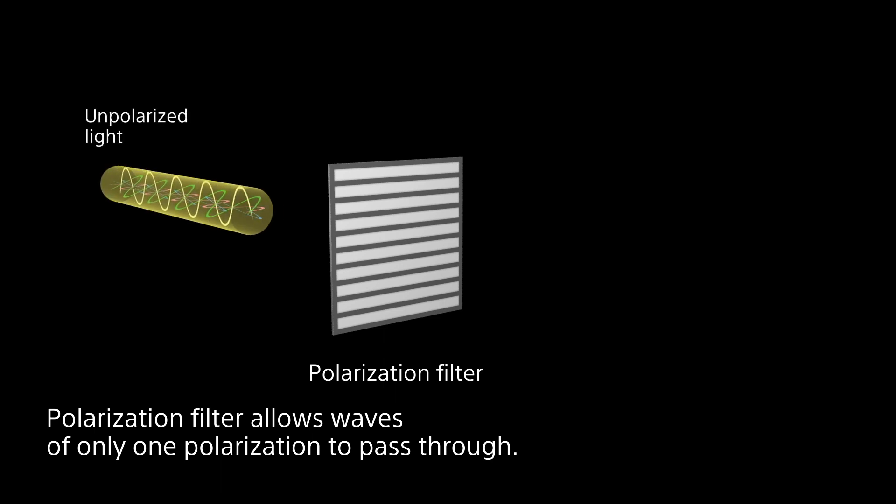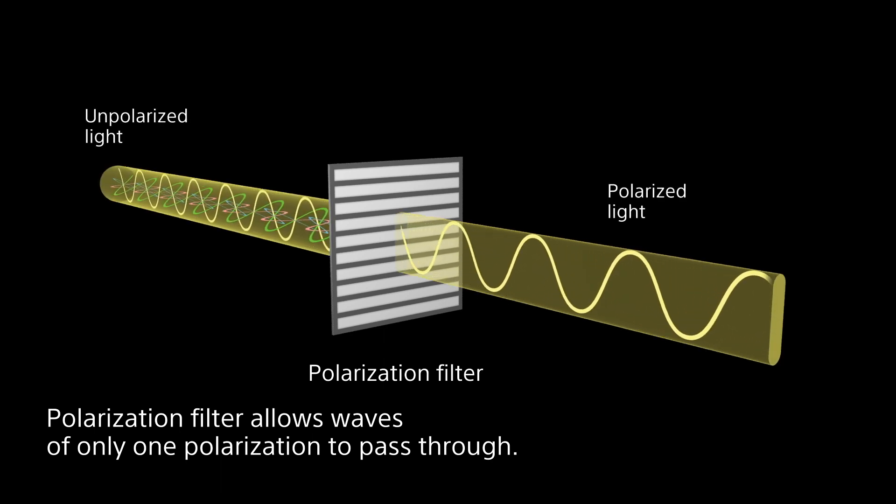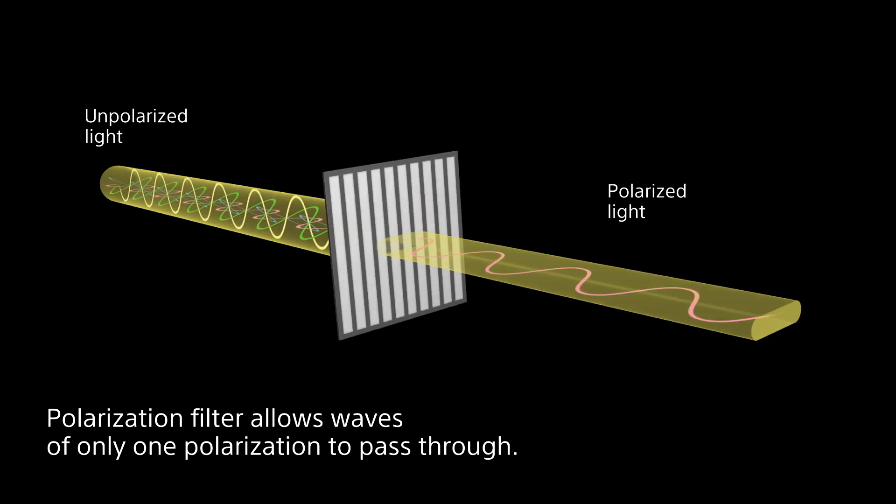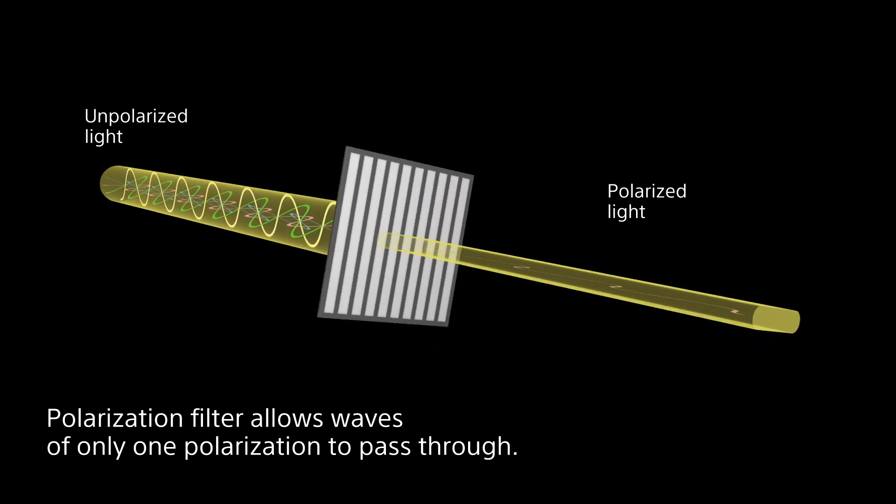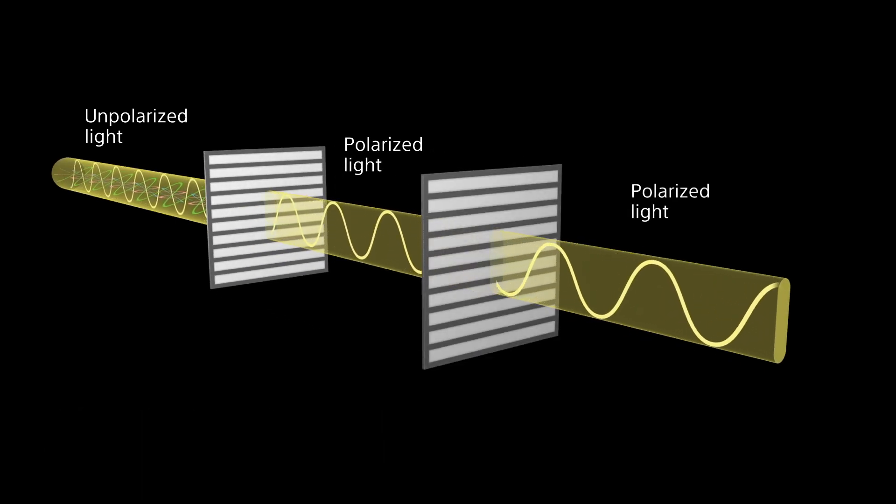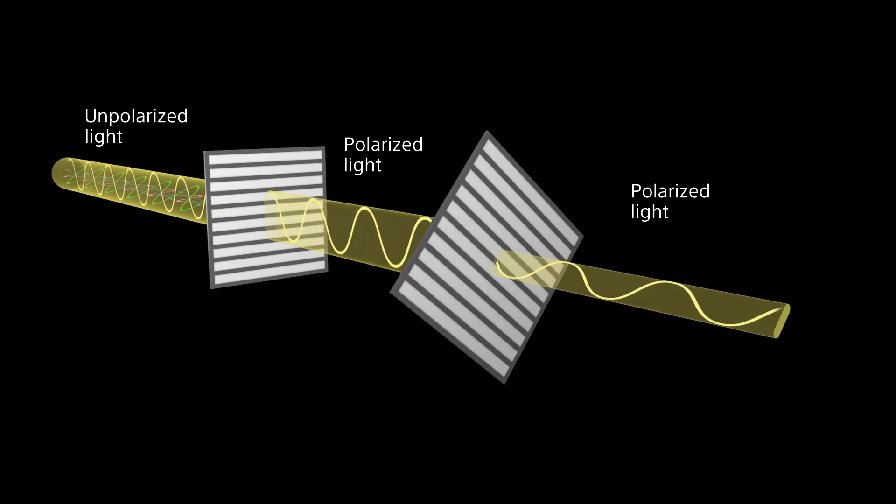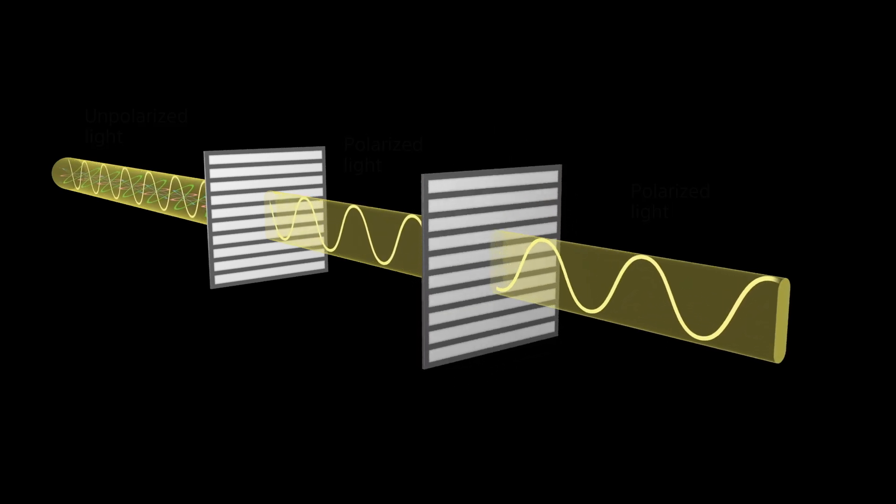By using a polarisation filter, we can extract polarised light. When polarised light enters the polarisation filter, the intensity of outgoing light changes depending on the relative angle between the polarised direction of incoming light and the polariser.